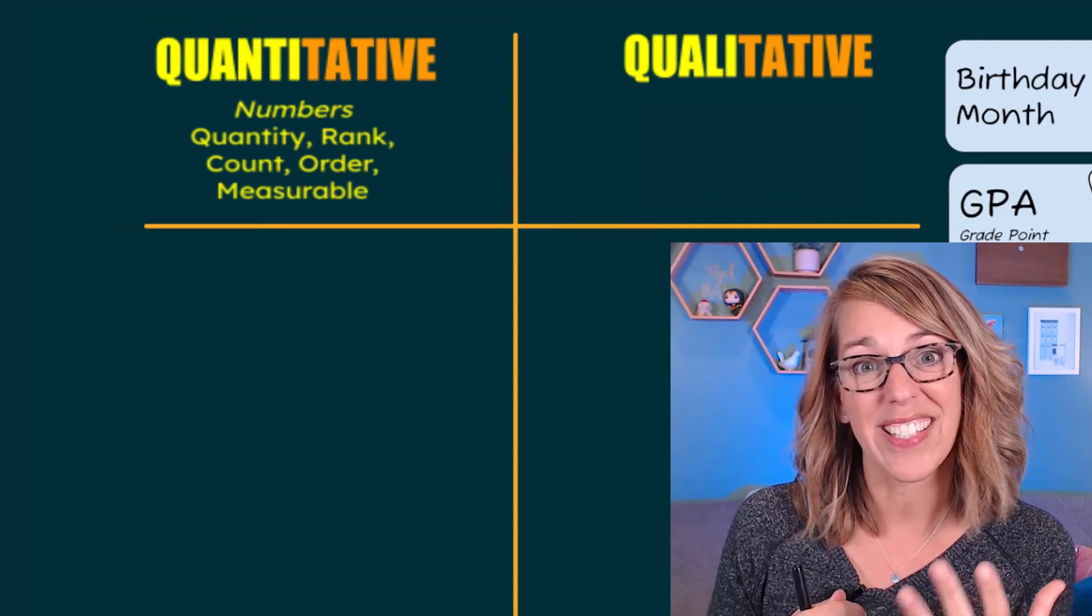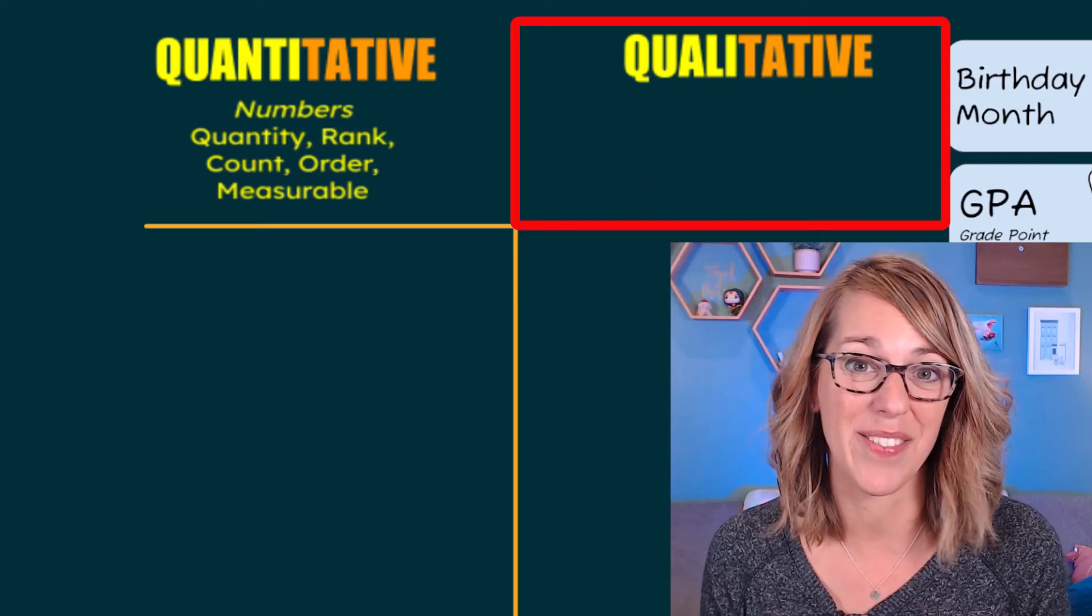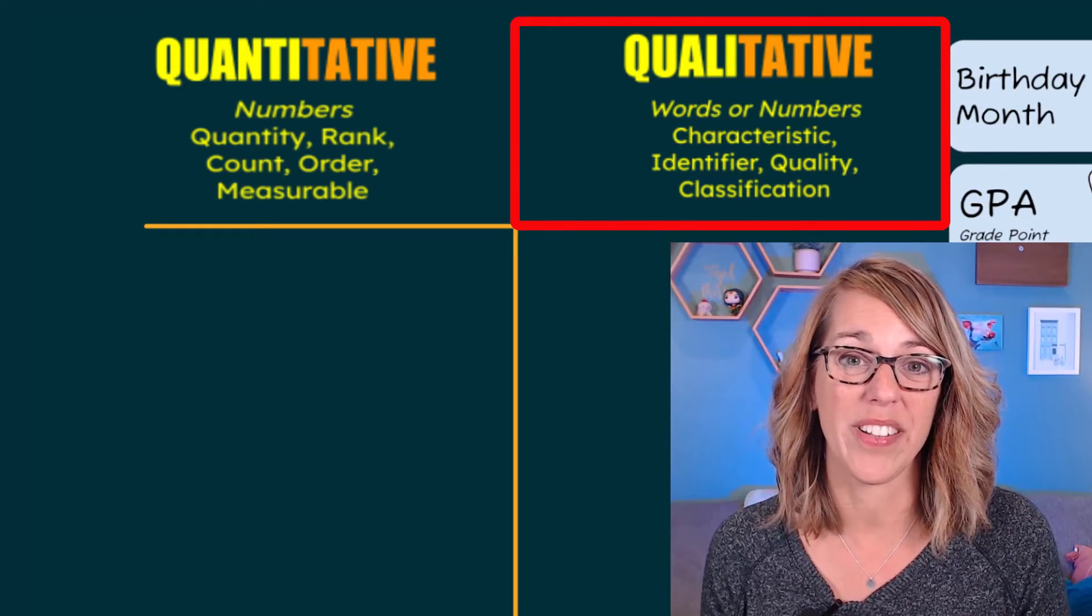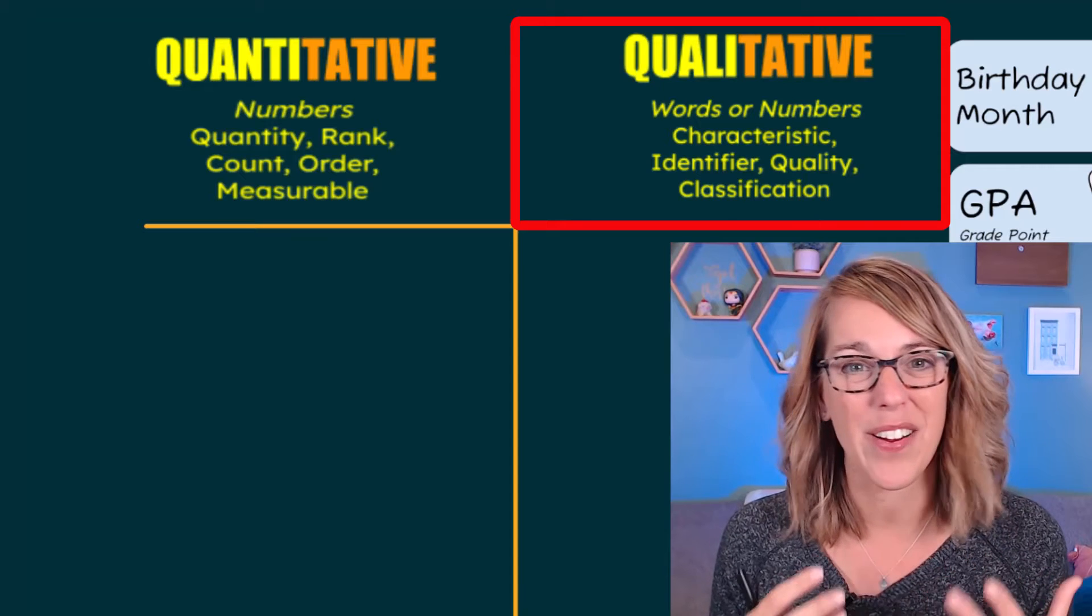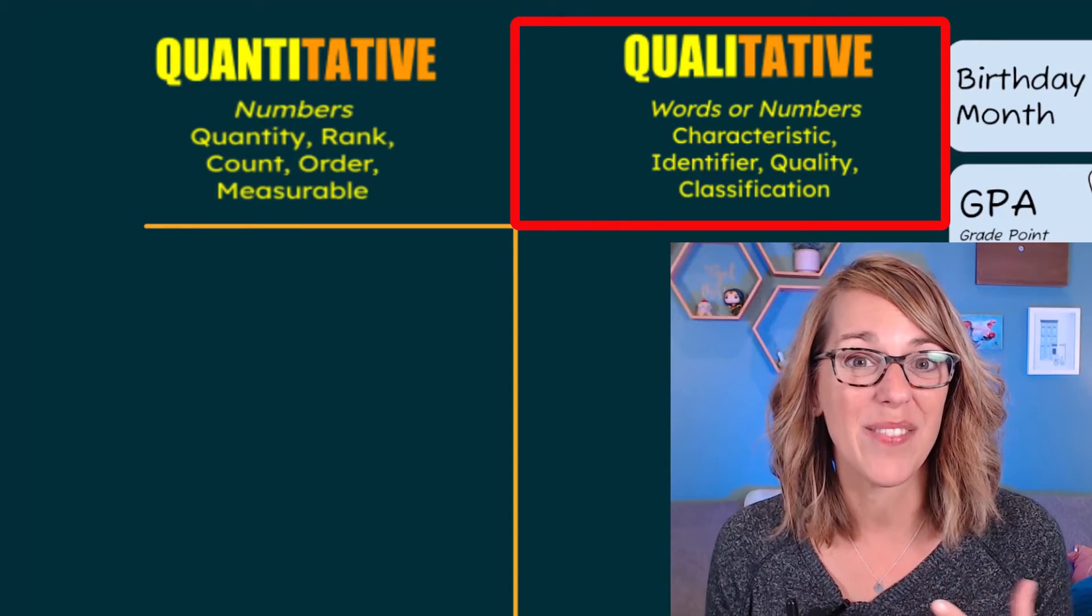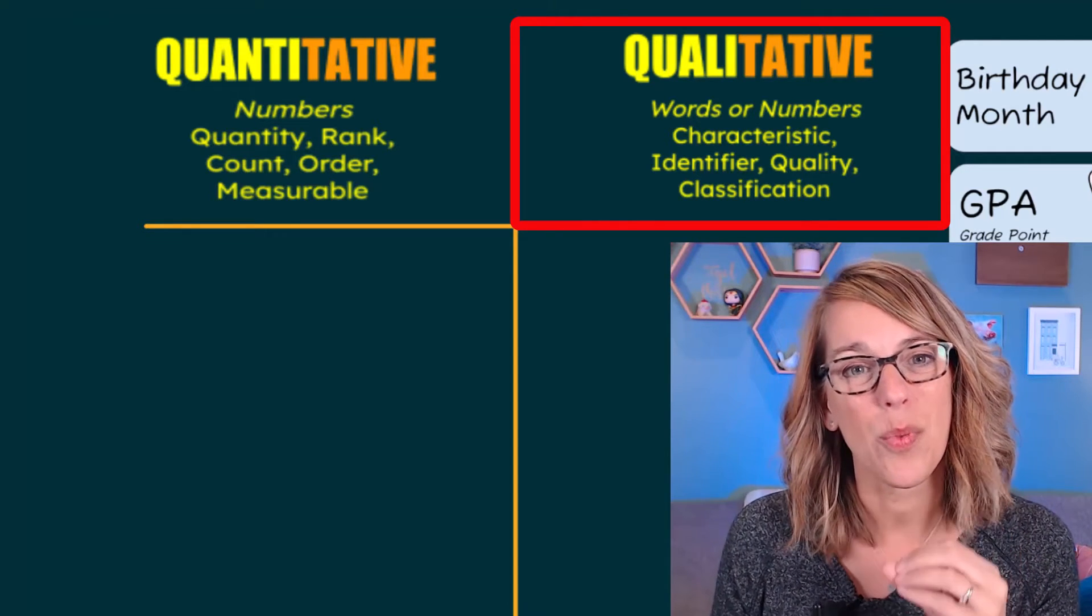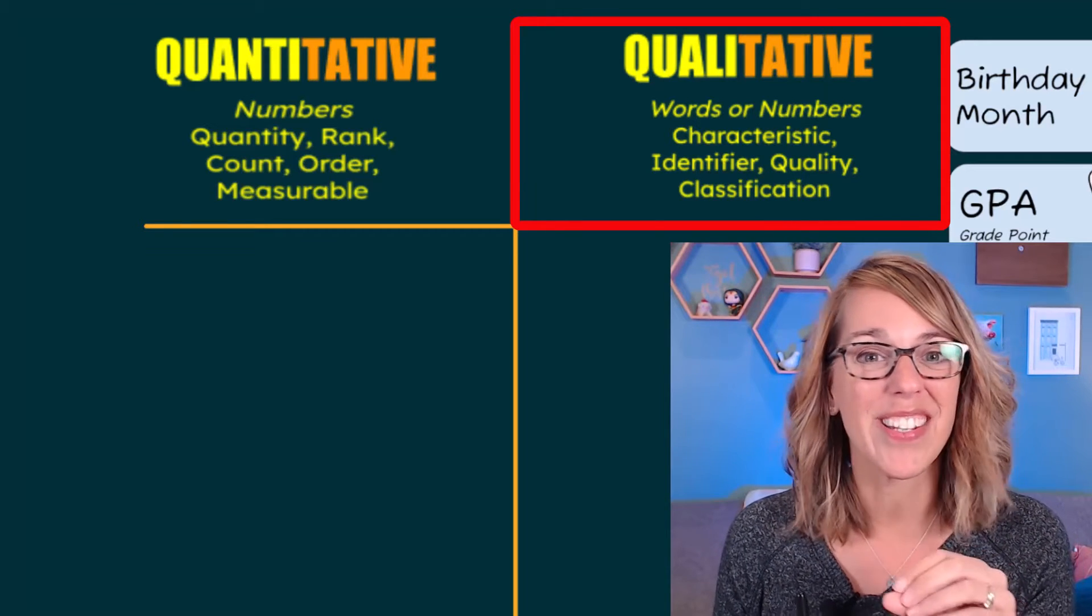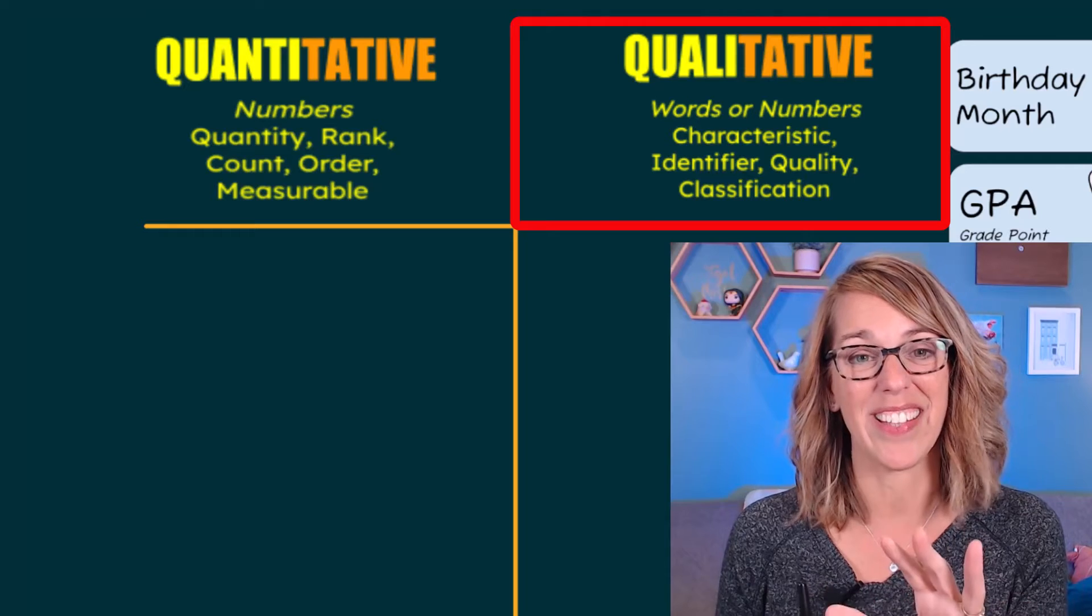Now if we switch over and talk instead about the qualitative variables, those are a quality. I've got that root word quality, and that's going to be some kind of a characteristic, an identifier. Usually they're words or names, but they could also be numbers as long as the number is only used as an identifier.